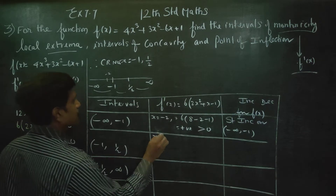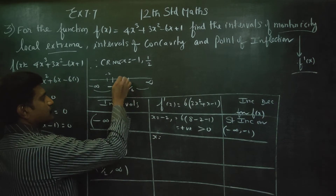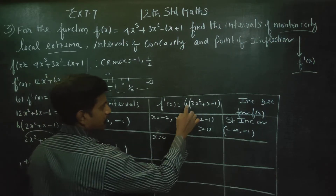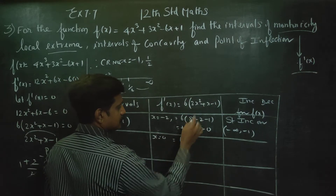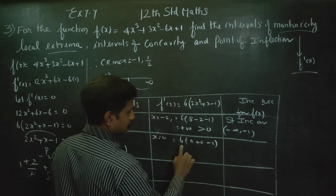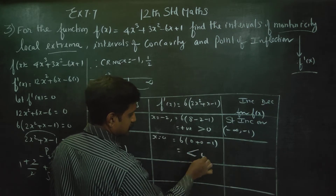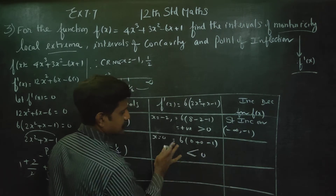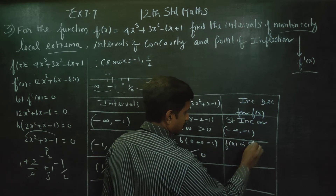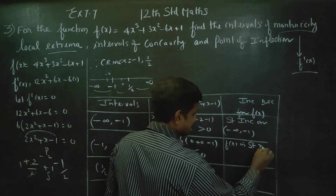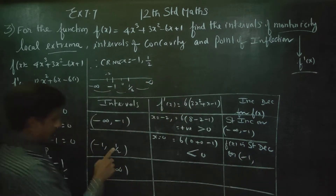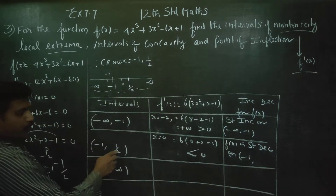For the interval (-1, 1/2), take x = 0. f'(0) = 6(0 + 0 - 1) = 6(-1), which is negative, less than 0. Therefore f(x) is strictly decreasing on (-1, 1/2).